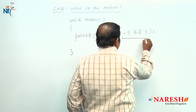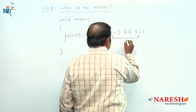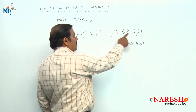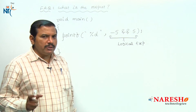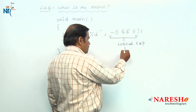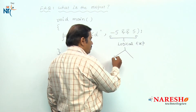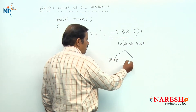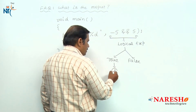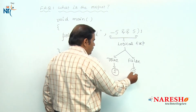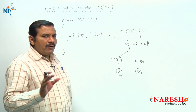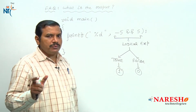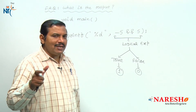The expression -5 logical AND 5 is known as a logical expression. The combination of operands with a logical operator is known as a logical expression. In C programming, a logical expression possibly contains two different values — either true or false. A true value is represented with 1 and a false value is represented with 0. In the case of logical operators, any non-zero value is considered as true and the value 0 is considered as false.